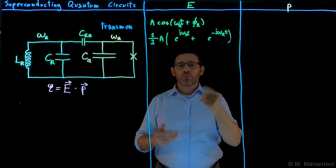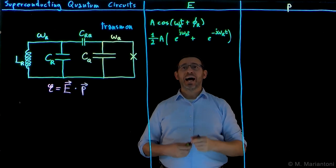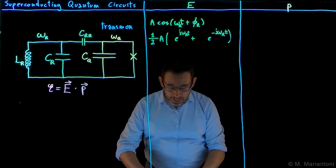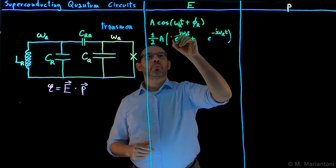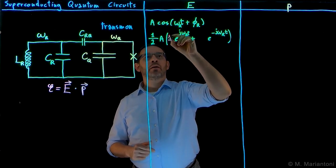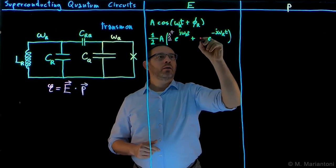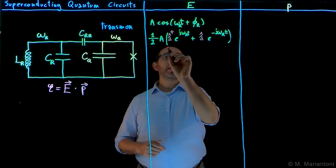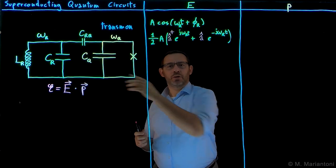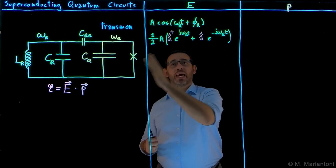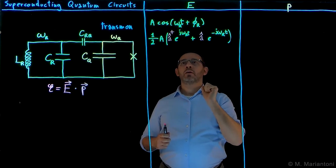If now we wanted to represent this quantity quantum mechanically in the Heisenberg picture, we simply promote it to a quantum mechanical operator by adding A dagger and A, which are rising and lowering operators for harmonic oscillator, and we have seen harmonic oscillator in simple quantum mechanics.